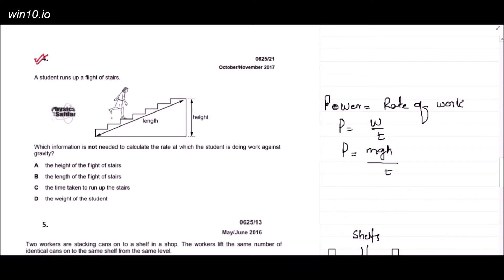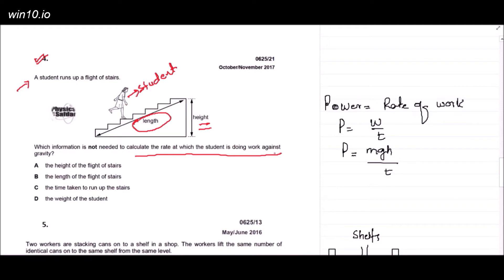Question number 4, from the October/November 2017 series. The question is: a student runs up a flight of stairs — which information is NOT needed to calculate the rate at which the student is doing work against gravity? Looking at the diagram, we have the student, the vertical height, and the length of the stairs.